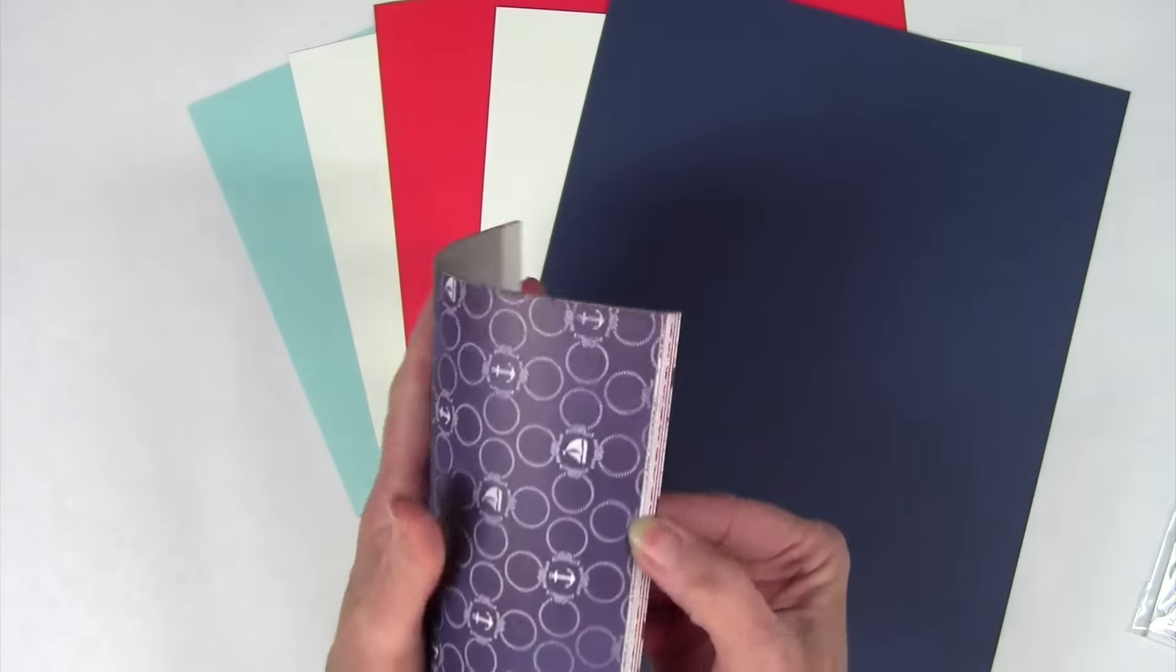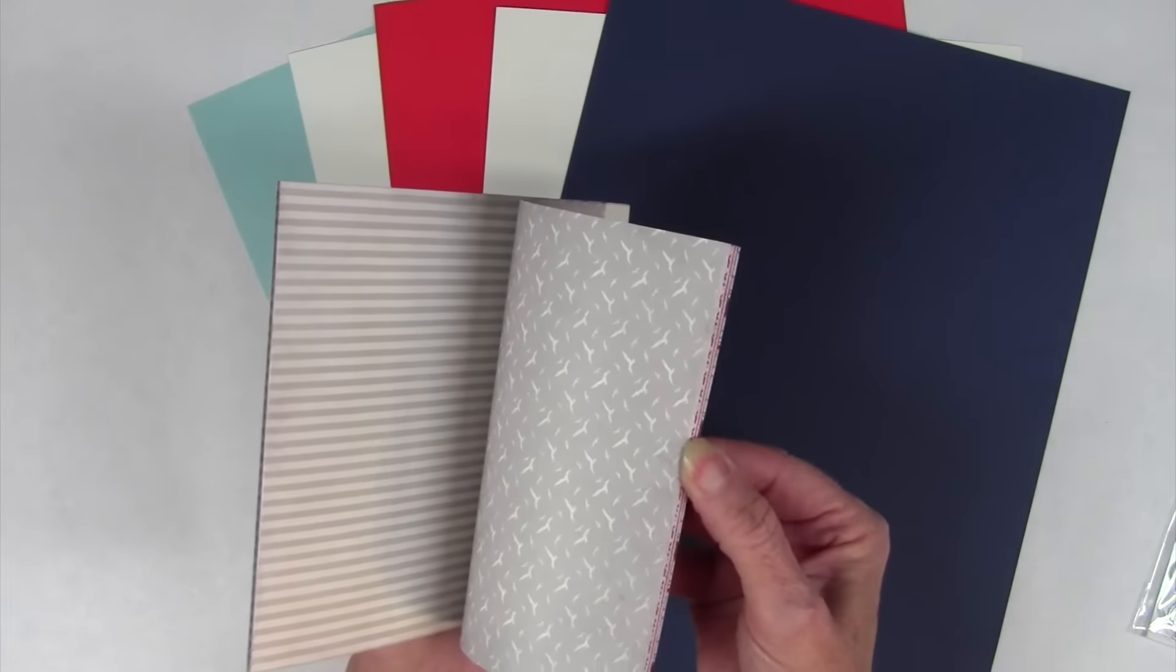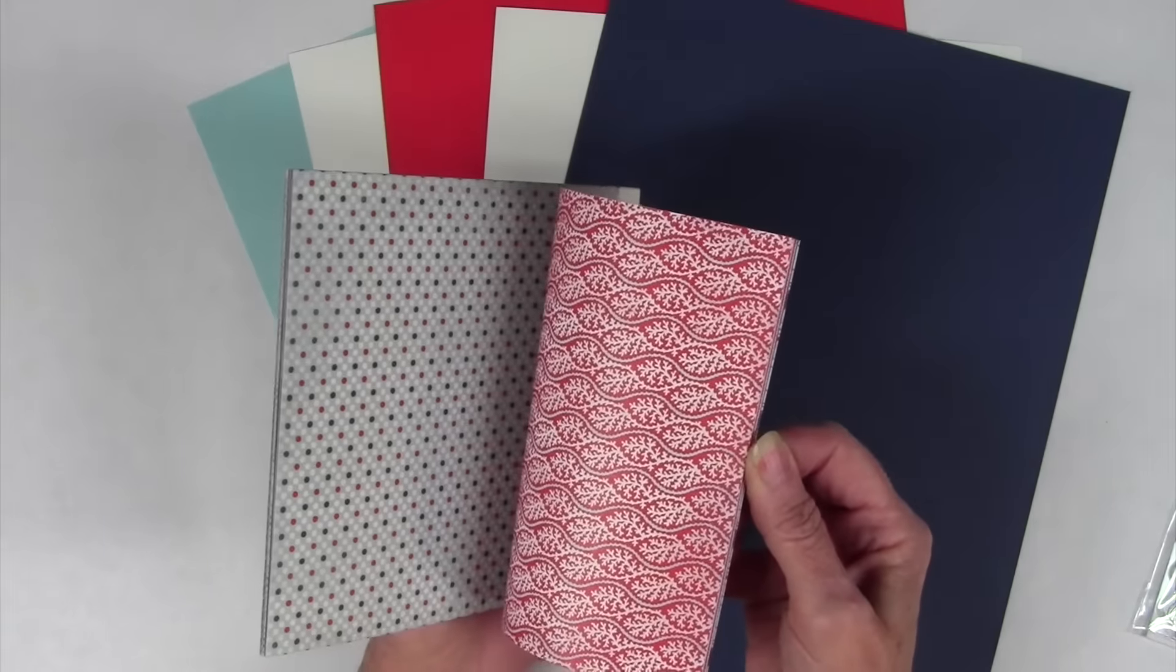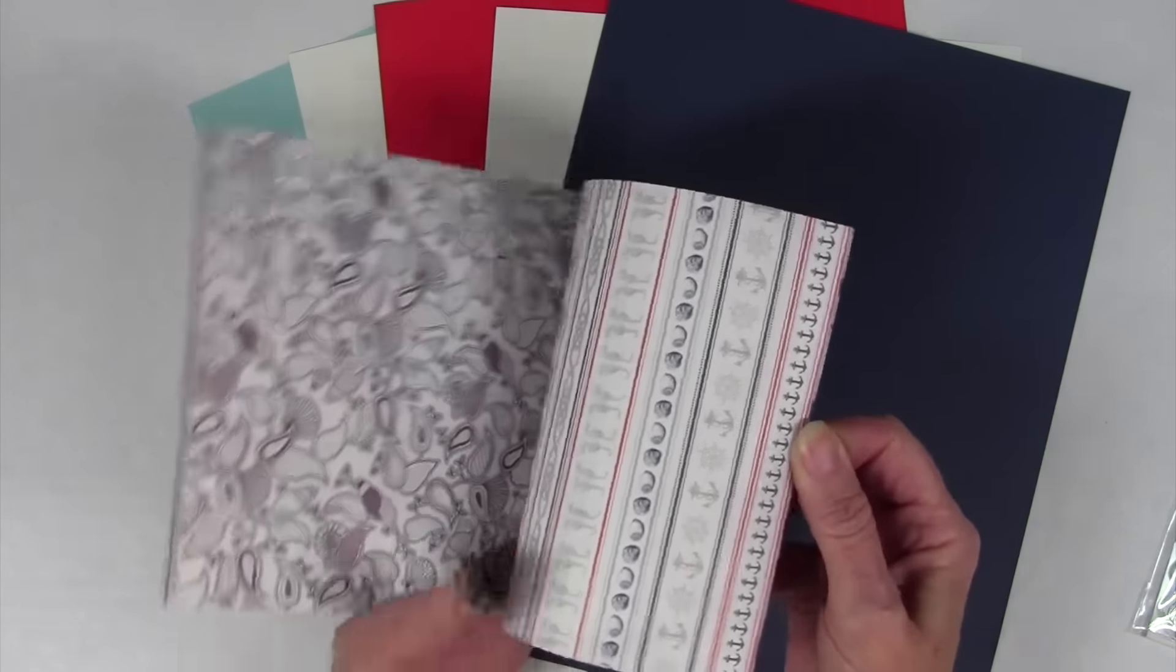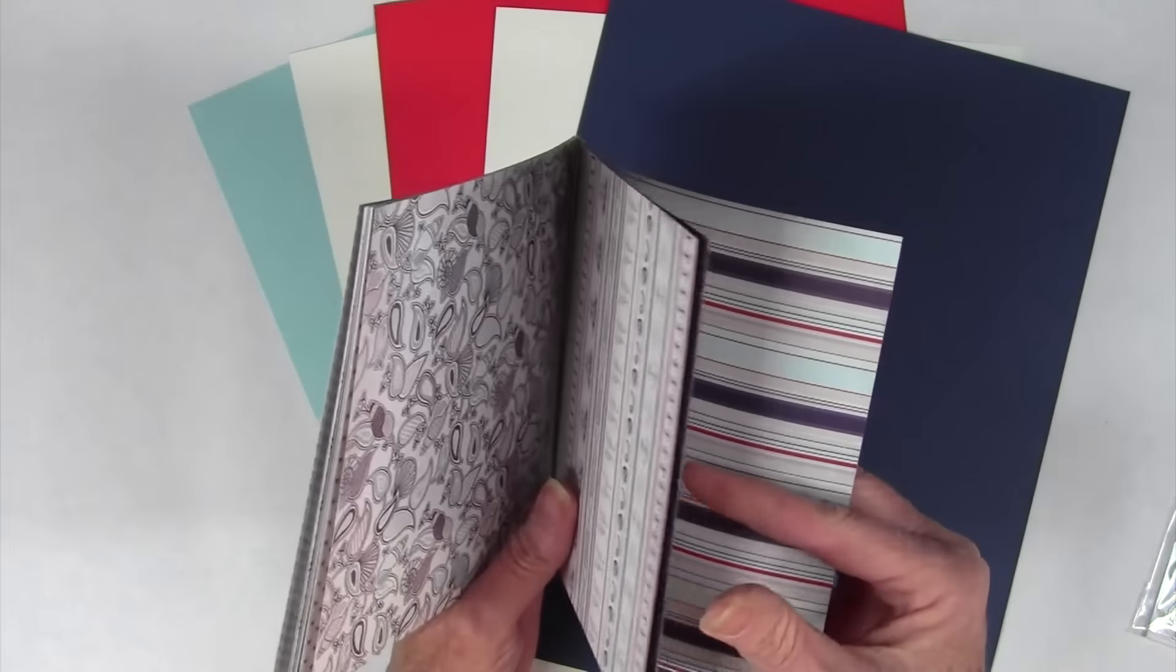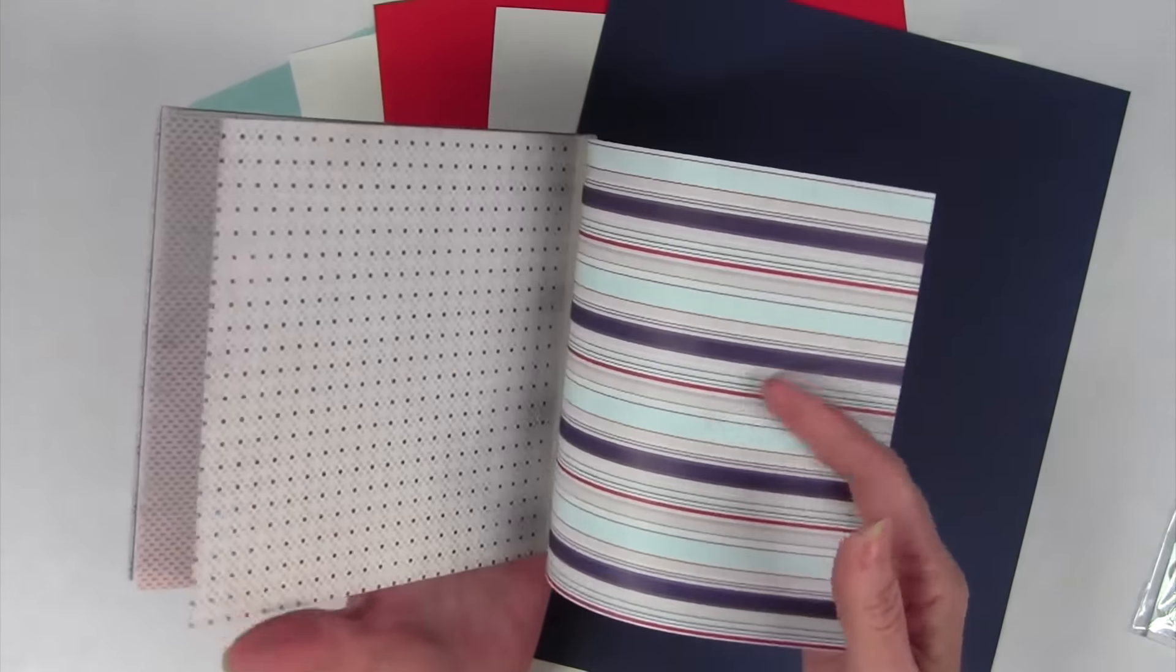The 6x6 papers come from Authentique and they are double-sided. They are nautical theme and the colors are red, white, and blue. Also a really nice light blue and also some grays.